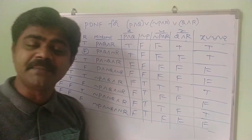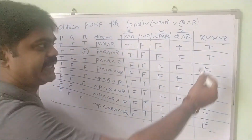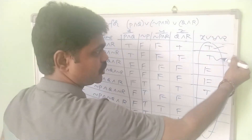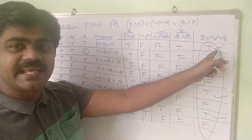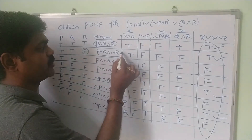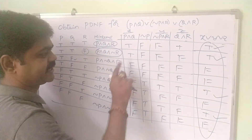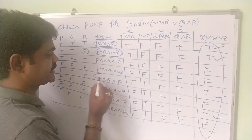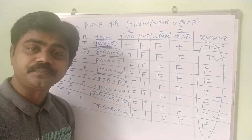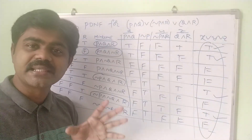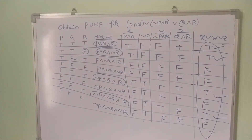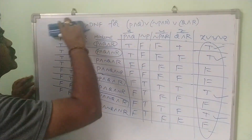In PDNF, we consider only the true values from the final output column. Placing tick marks on the true rows, we identify the corresponding minterms. The true rows are rows 1, 2, 5, and 7, leaving the false rows aside.